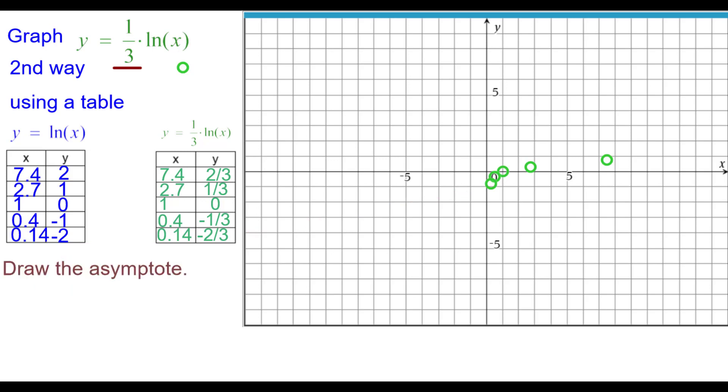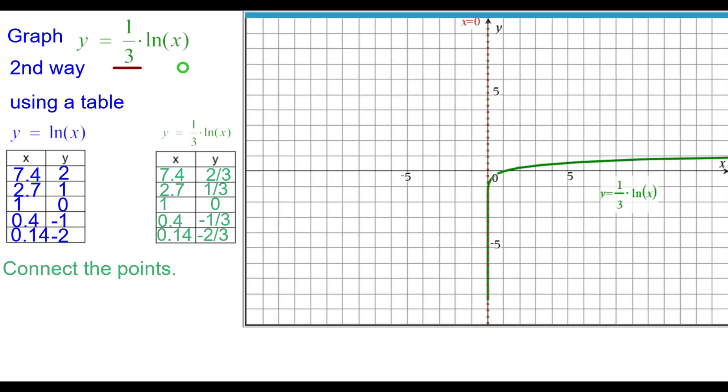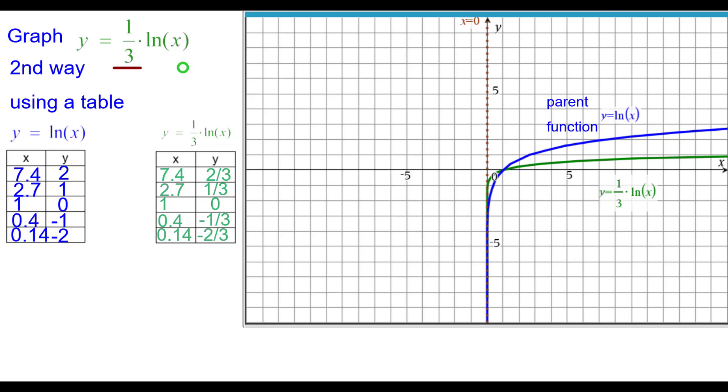Draw the asymptote, which is the y-axis, the line x equals zero, and use that as a boundary line when you connect the points. And we'll compare it to y equals natural log of x, the parent function in blue.